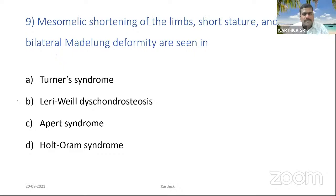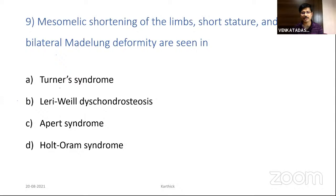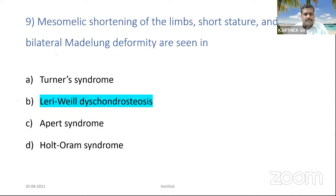The ninth question: mesomelic shortening of the limbs along with short stature and bilateral Madelung deformity is seen in which syndrome — Turner syndrome, Leri-Weill dyschondrosteosis, Apert syndrome, or Holt-Oram syndrome? There will be mesomelic shortening — that is middle segment shortening — in the forearm and leg. Fifty percent got the correct answer: Leri-Weill dyschondrosteosis.